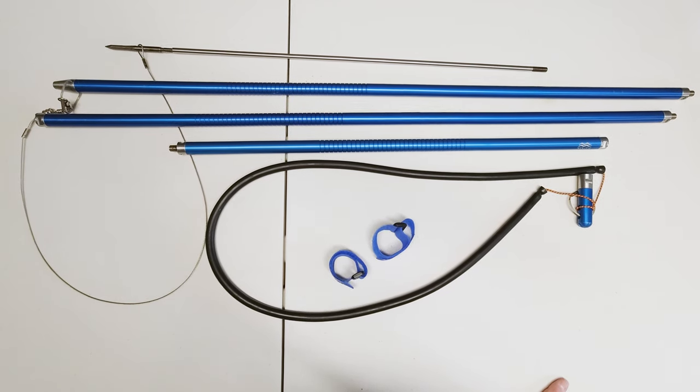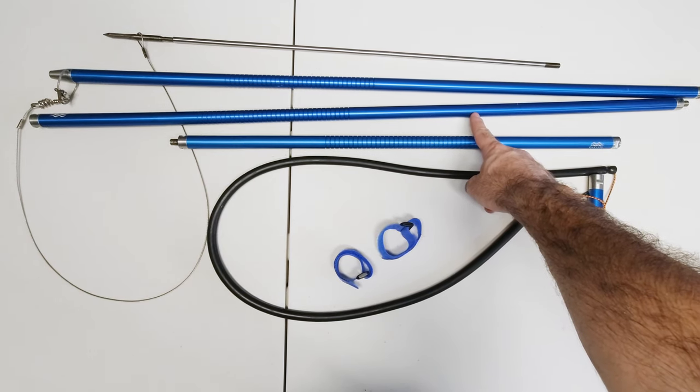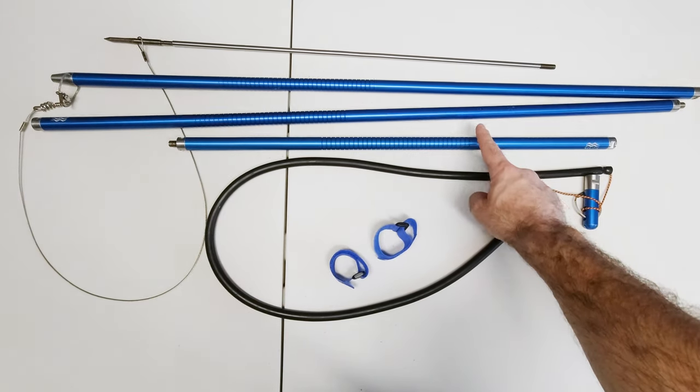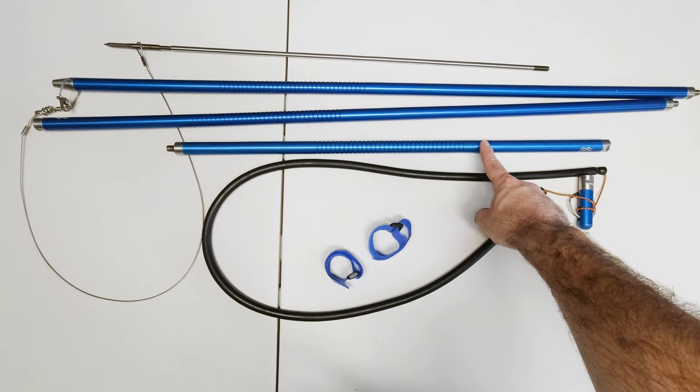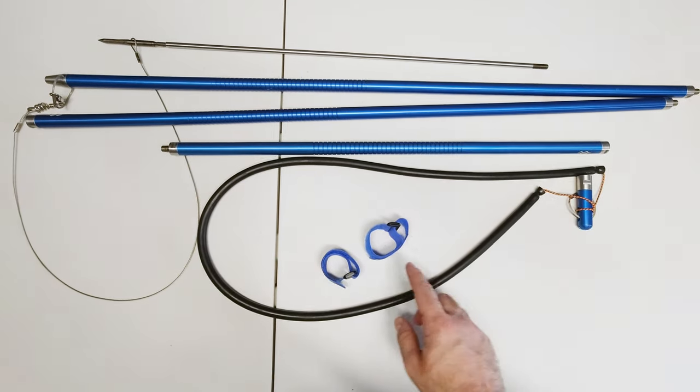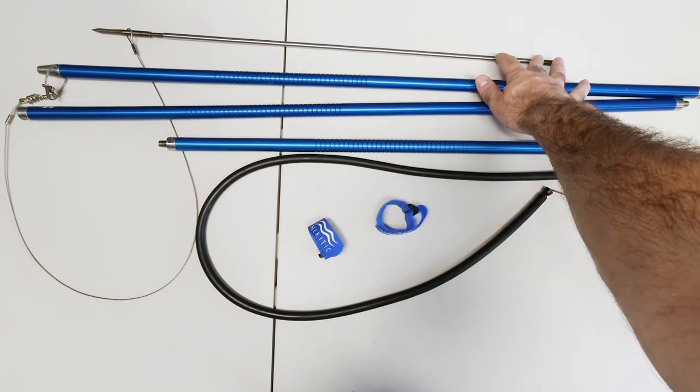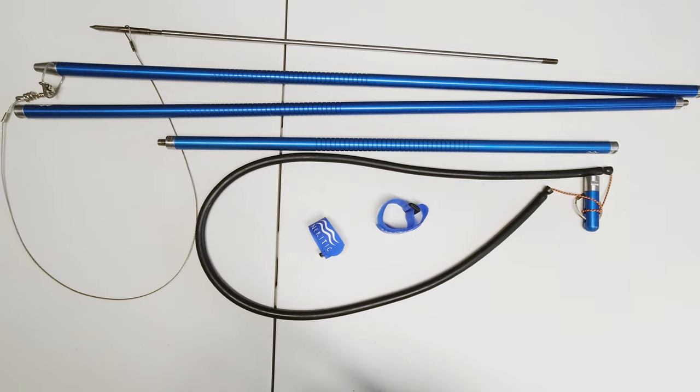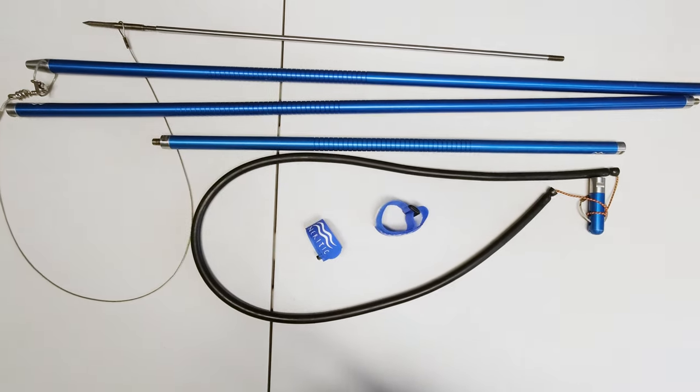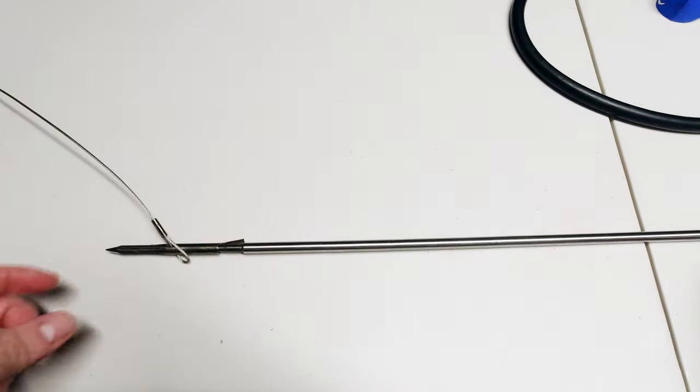On the pole spear itself, you would get three anodized blue sections: the nose piece (3 feet), the interchangeable midsection (3 feet), and another interchangeable section (2 feet). You would get the power band with the buttstock, two velcro straps, the 2-foot injector rod with a magnetic slip tip, and a pigtail loop system with the cable.